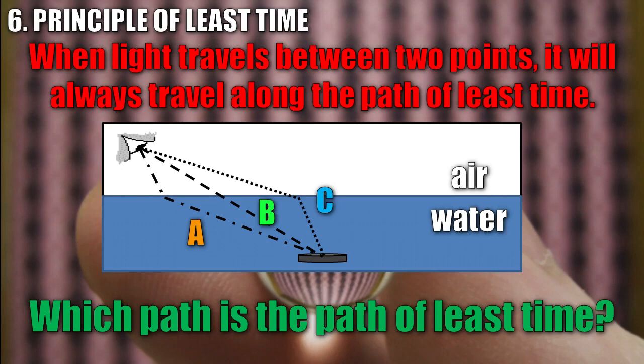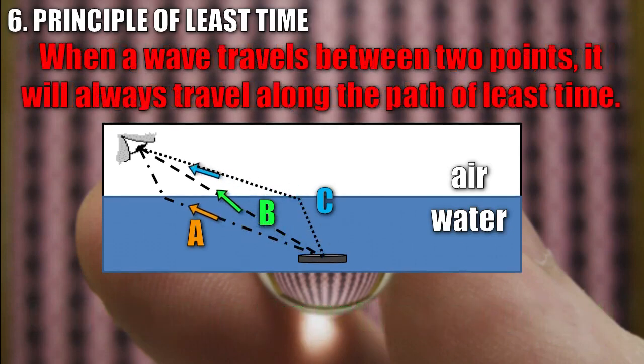The path of least time is the path along which the light will reach the eye first. And since light travels slower in water, the path of least time is actually path C. Let's look at that one more time. Notice that while the light was in the water, it goes slow. And when it reaches out to the air, it speeds up.